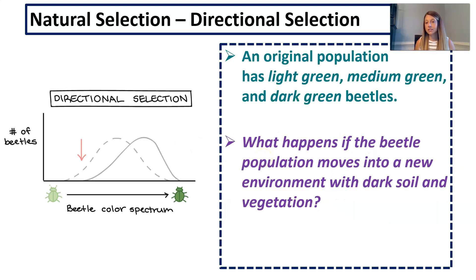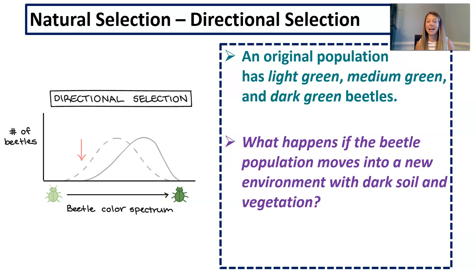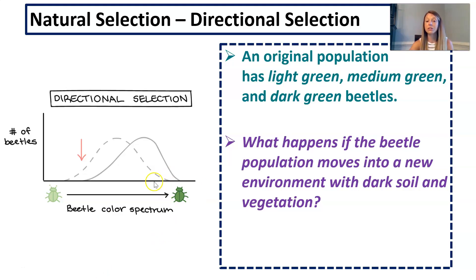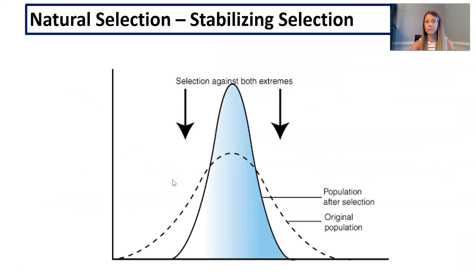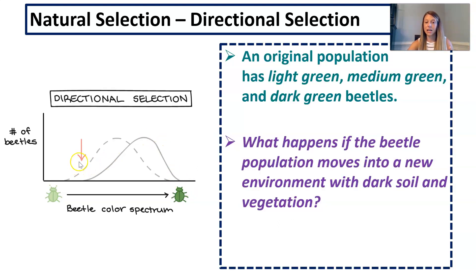Imagine our original population is a combination of beetles — some light green, some dark green, but the majority a medium green. That's the dotted line. What happens if a beetle population moves into a new environment with dark soil and dark vegetation? The dark beetles blend in, while medium and light colored beetles stand out and are more easily eaten by predators. So the dark green beetles survive, reproduce, and pass on those dark green genes to the next generation. That is directional selection — a shift toward that one extreme.